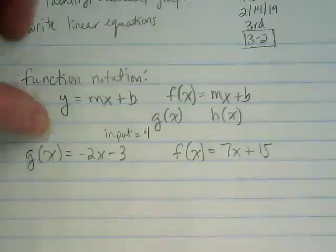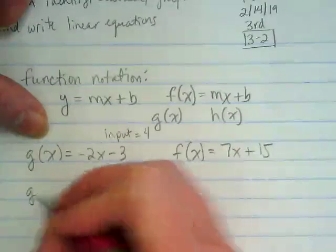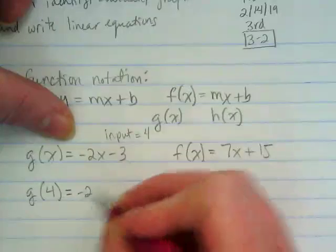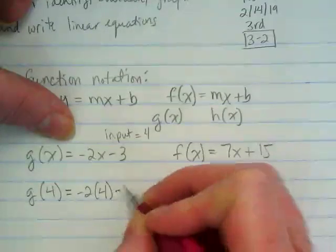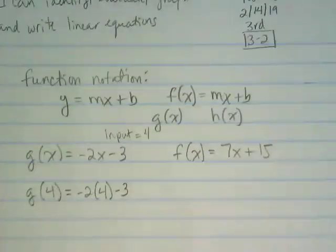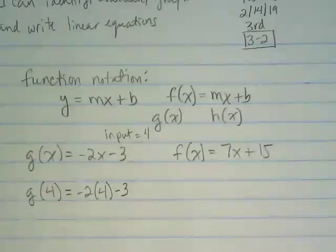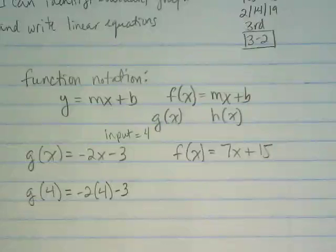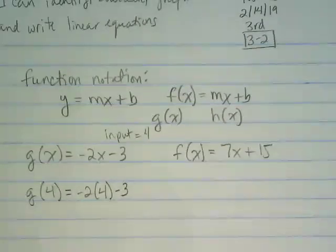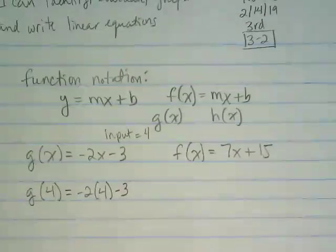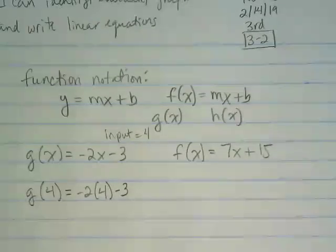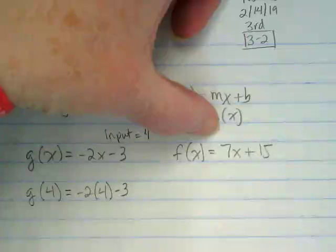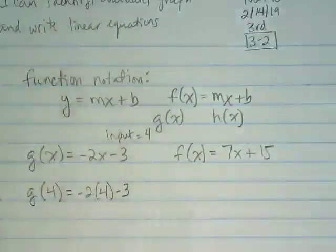What if I told you that I wanted your input for both of these to be equal to 4? How would we rewrite this first one? We would say g(4) equals negative 2 times 4 minus 3. Where there were x's I put my input. Do you see what I did there? Try to write this one using the same input for this equation.